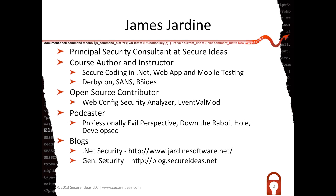My name is James Jardine. I'm a principal security consultant at Secure Ideas, a course author and instructor — I've written content for SANS and done instructing at DerbyCon, B-Sides Orlando, and various SANS events. I'm heavily into podcasting: Professional Evil Perspective with Kevin, Down the Rabbit Hole with Rafael Loz, and DevelopSec, which is just me. I also blog on both my personal blog and the Secure Ideas blog, where we try to put up content that's actually useful.